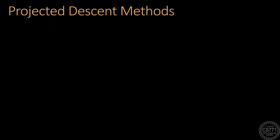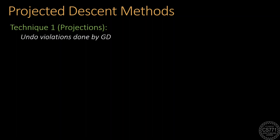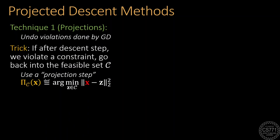The first technique that we will study for handling constraints is the projected gradient descent method. The idea behind this technique is to simply undo any constraint violations done by gradient descent steps by using what is called a projection step.